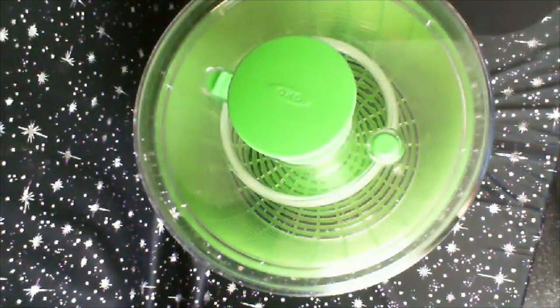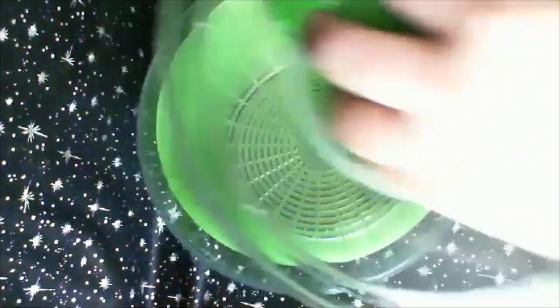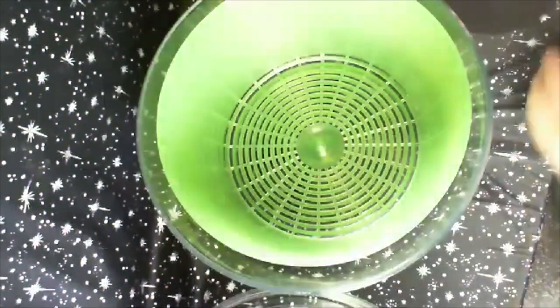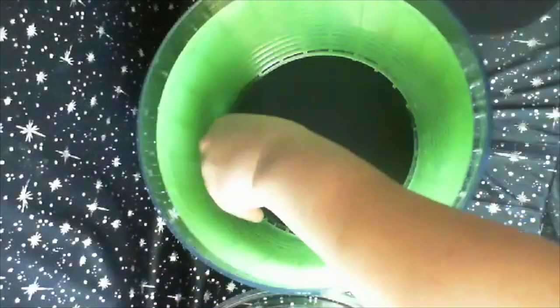Open the lid on the salad spinner and place your round piece of construction paper in the bottom. Make sure you've trimmed it so that it fits in the bottom.